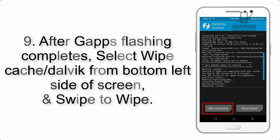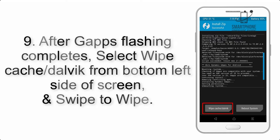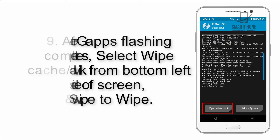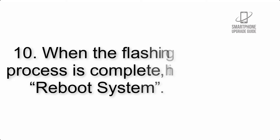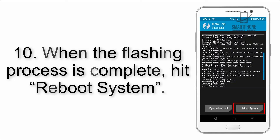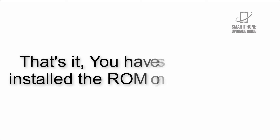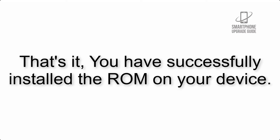Step 9: After GApps flashing completes, select Wipe Cache and Dalvik from the bottom left side of the screen and swipe to wipe. Step 10: When the flashing process is complete, hit Reboot System. That's it — you have successfully installed the ROM on your device.